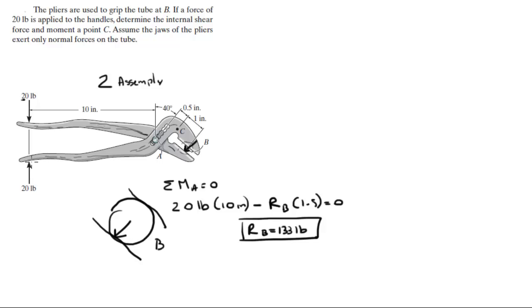And the other one is the same thing. The distance is 20 times A, and it has a reaction, but the reaction is the other reaction from B that goes the opposite way. And that reaction is also 133 because everything is the same, 1.5 inches here, 10 inches here, and it's also a 20 pound force on this jaw. So you have the reaction at B to be 133 pounds.